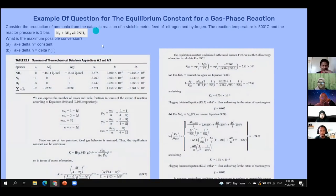Next, I will present about the example of question for the equilibrium constant for gas phase reactions. Consider the production of ammonia from the catalytic reactions of stoichiometric feed of nitrogen and hydrogen. The reaction temperature is 500 degrees Celsius, and the reactive pressure is 1 bar. The equation is N2 plus 3 mol of hydrogen will produce 2 mol of ammonia. The question is, what is the maximum possible conversion when A, take delta H equal to constant, and B, take delta H equal to delta Ht. In table E9.7, summary of the thermochemical data for appendices A2 and A3, this shows the thermochemical data for these particular equations.